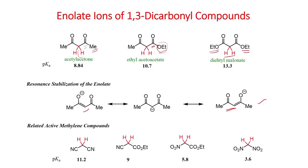This slide shows about the pKa value of the acidic protons. When you look at this C-H bond of acetyl acetone, the pKa value of this proton is 8.84. When you replace one of the methyl groups with an ethoxy group, the pKa value of this proton is increased to 10.7. This is because the electrophilicity of this carbonyl group is now reduced, because the ethoxy group can donate electrons more, reducing the electrophilicity of the carbonyl group. Therefore, the acidity of this proton is reduced.